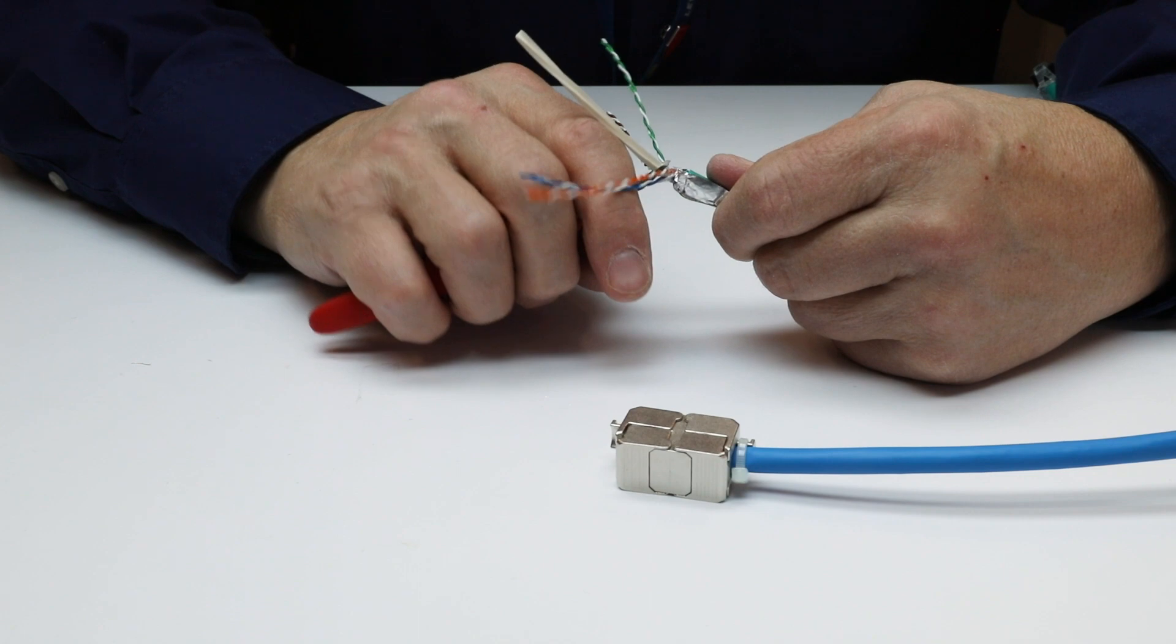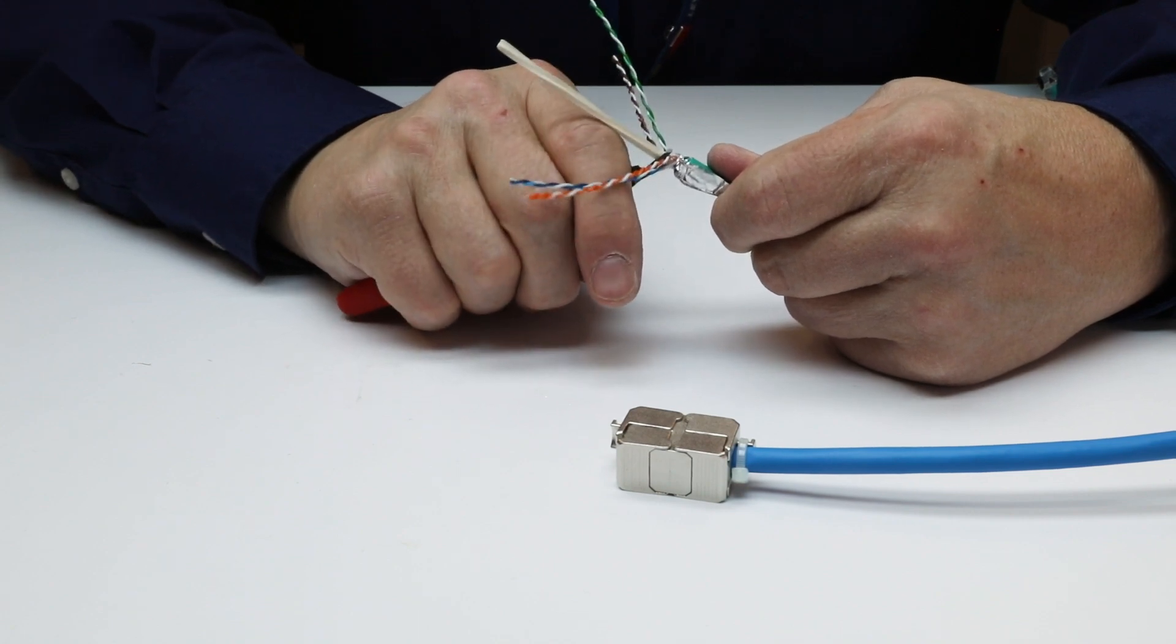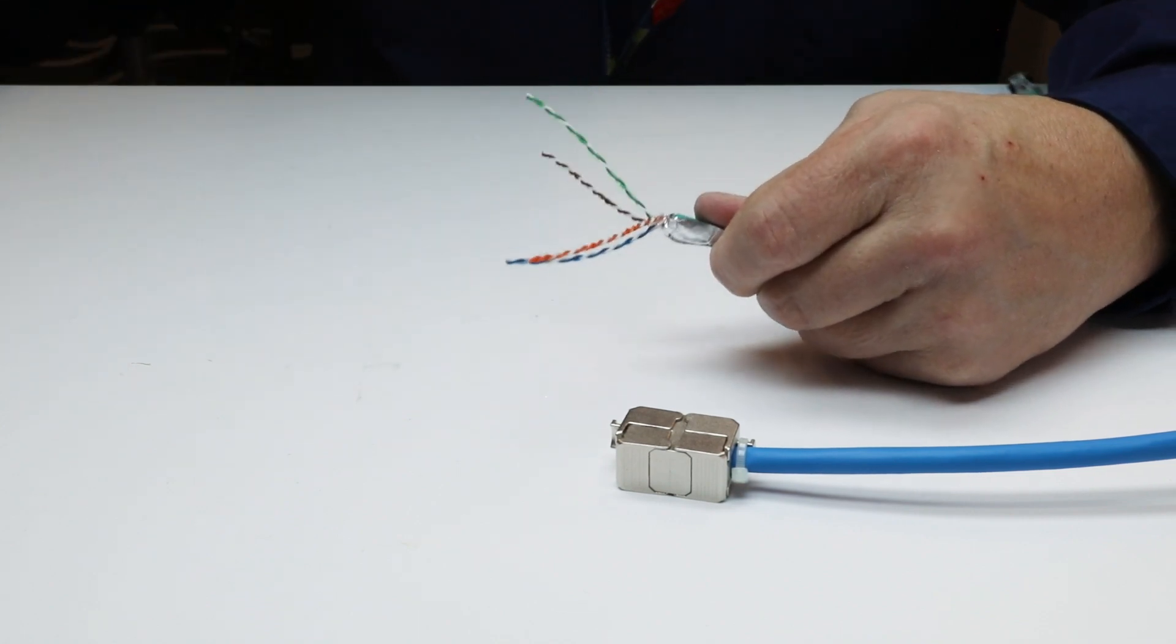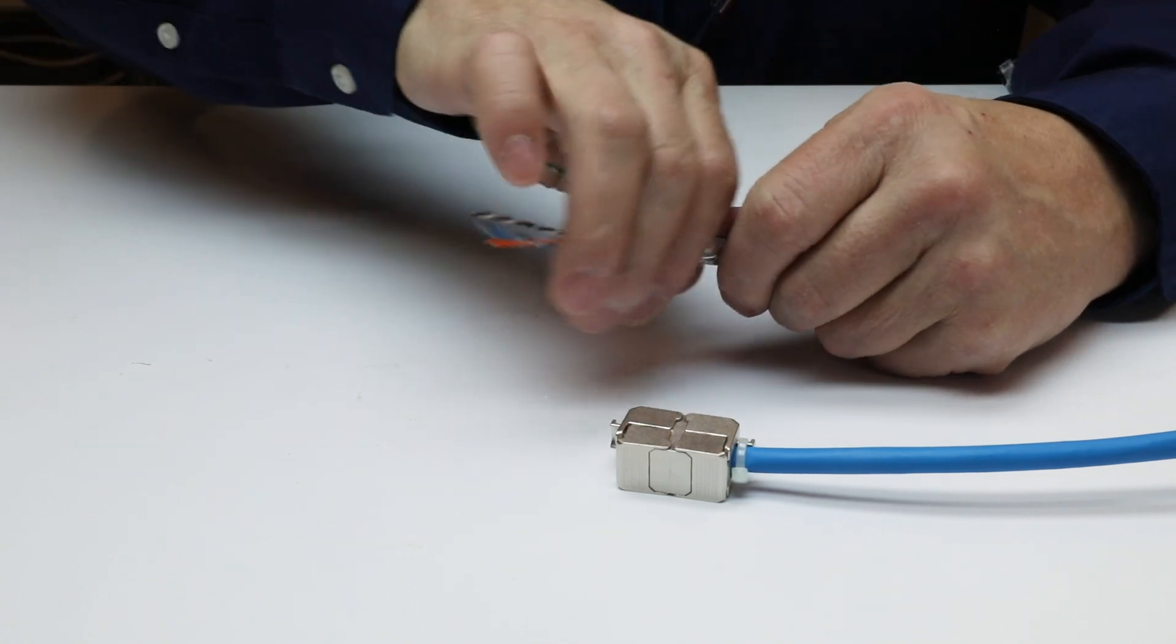Remove the cable's center spline, taking care not to damage pairs, foil, or drain wire. Other patch cords may vary in their construction, but cable preparation will be similar.